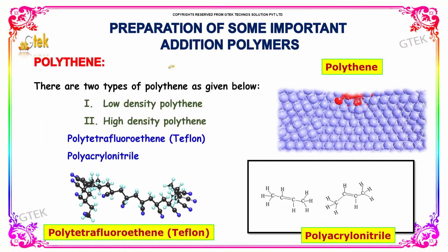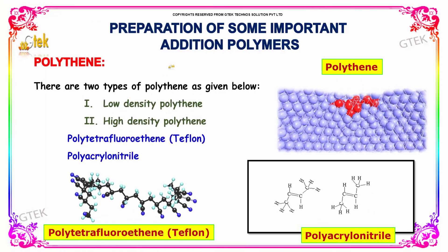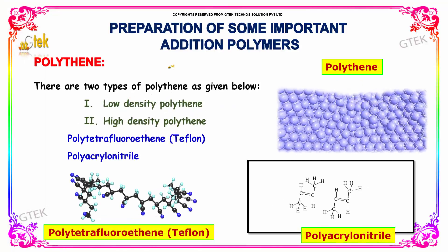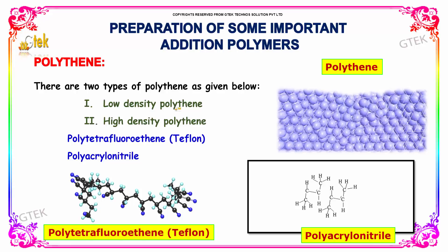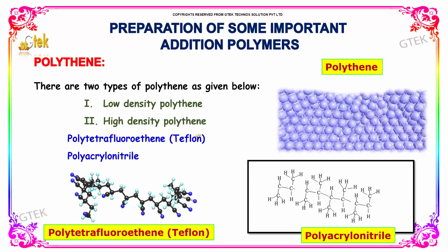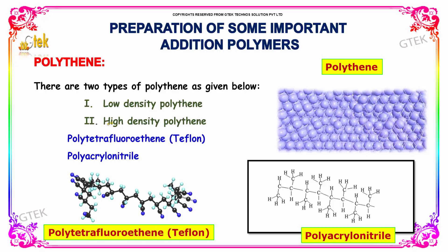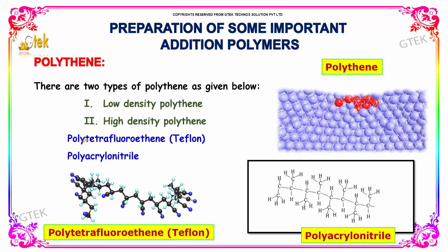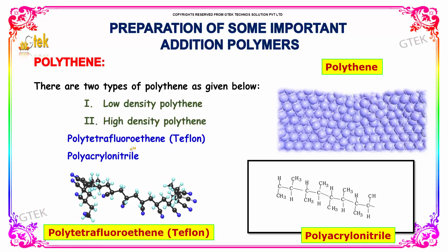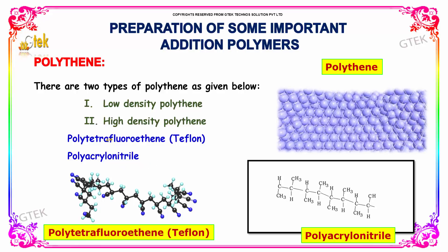There are two types of polythene: low density polythene and high density polythene. Furthermore, we have polytetrafluoroethylene and polyacrylonitrile under the high density polythene category.